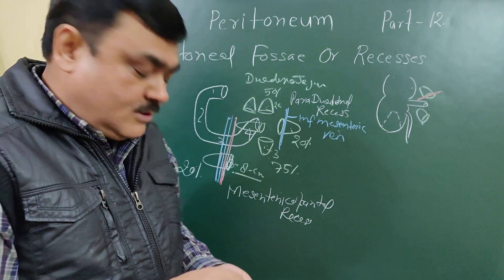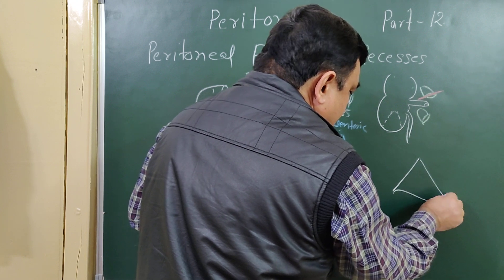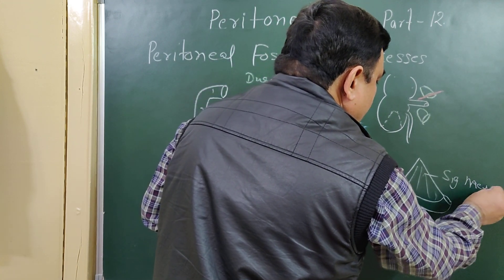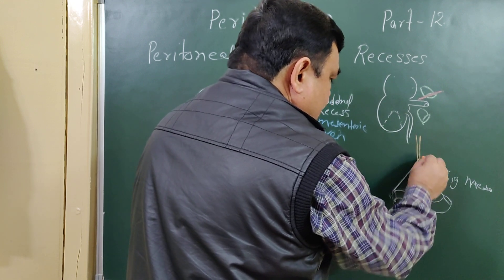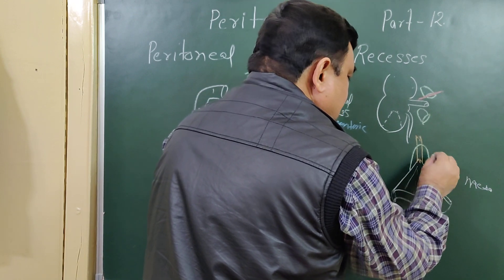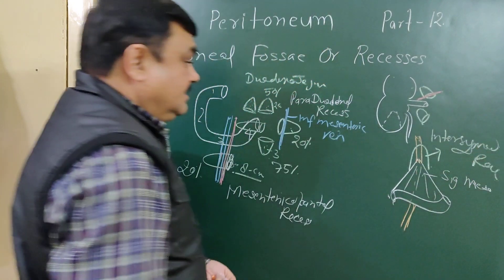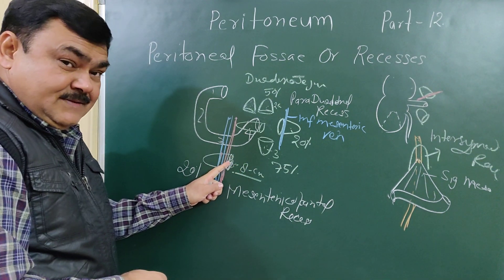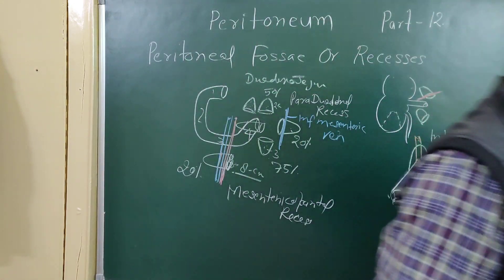The recess in relation to the sigmoid colon is the intersigmoid recess. Here is the sigmoid mesocolon and the sigmoid colon. The position of the left ureter is behind this recess. The intersigmoid recess is clinically important — an internal hernia may occur through this recess, with a loop of intestine passing through it. This concludes the discussion about the peritoneal recesses.